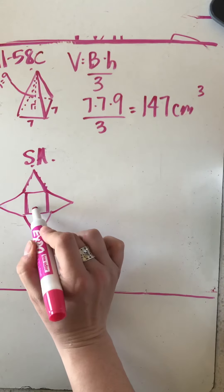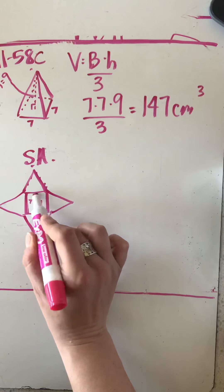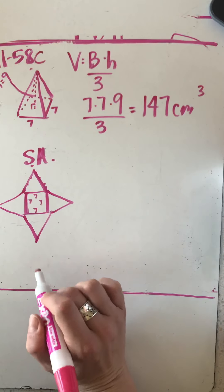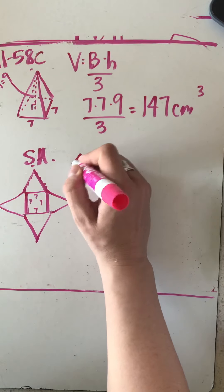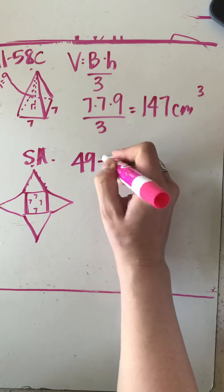So I know because this is a square, 7, 7, 7, 7, and the area of the square is 49. Seven times seven is 49. So let's start with that. That's pretty easy.